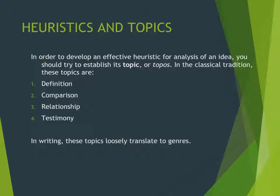What is the relationship between heuristics and topics? In order to begin developing effective heuristics for analysis of an idea, you should try to establish its topic, or topos. In the classical tradition, these topics are definition, comparison, relationship, and testimony. In writing, these topics can sometimes translate to genres or modes. For example, the topos of definition usually applies to expository writing, like reports and news stories. On the other hand, comparison and relationship might apply to analytical or synthesis writing. What this really means is that you have to develop a heuristic, or method of writing, for each type of writing you are tasked with.